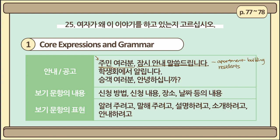How about when you hear 학생회에서 알립니다? This means that the notification is from the 학생회, the student council. So it is likely to be in a school where the target audience is the student body.